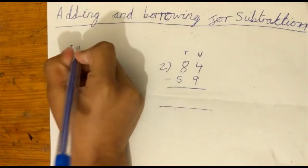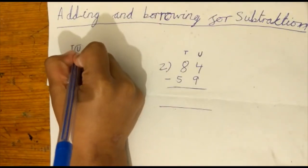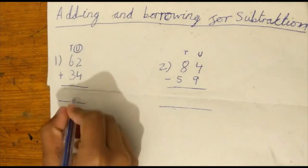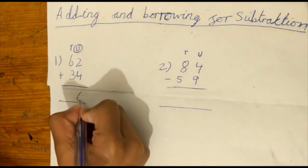So I'm going to circle the U, telling me that I'm doing the units. So 2 plus 4 is 6. So I'm going to write 6 in the lines down there.